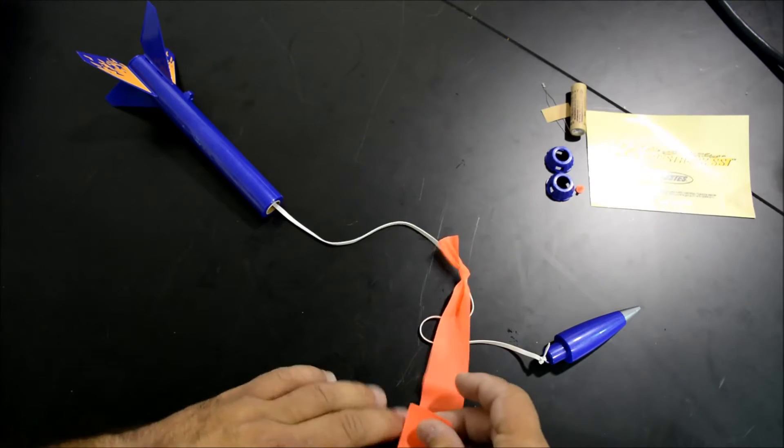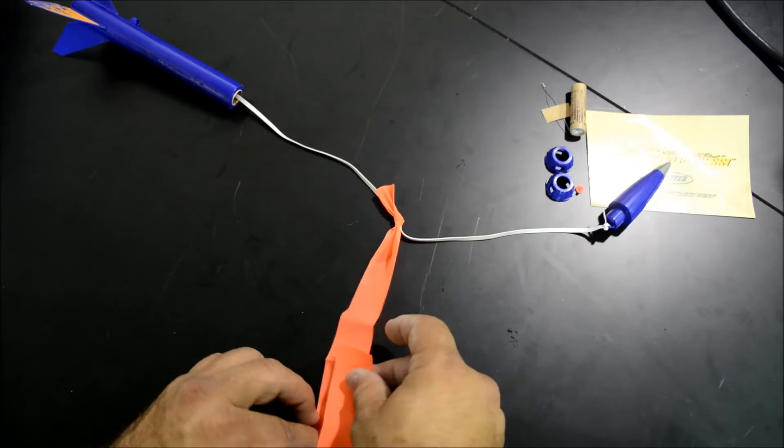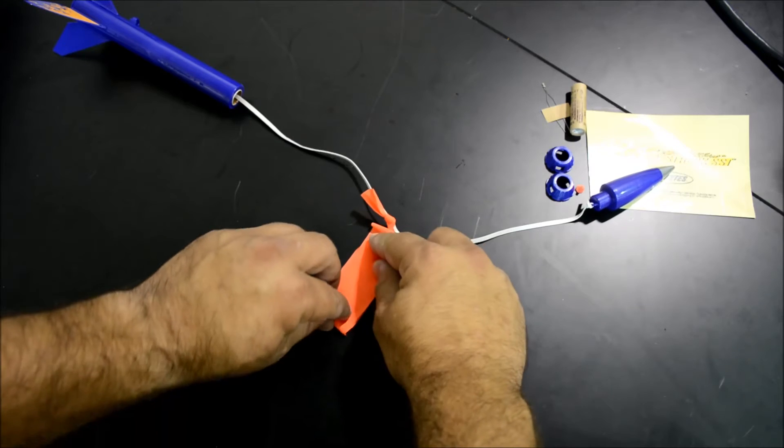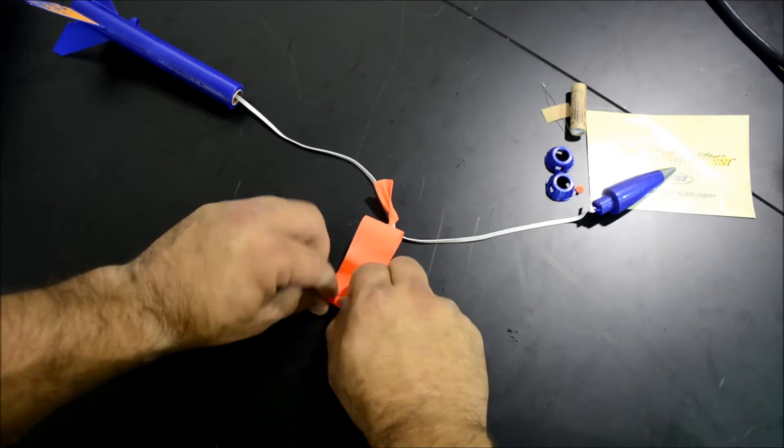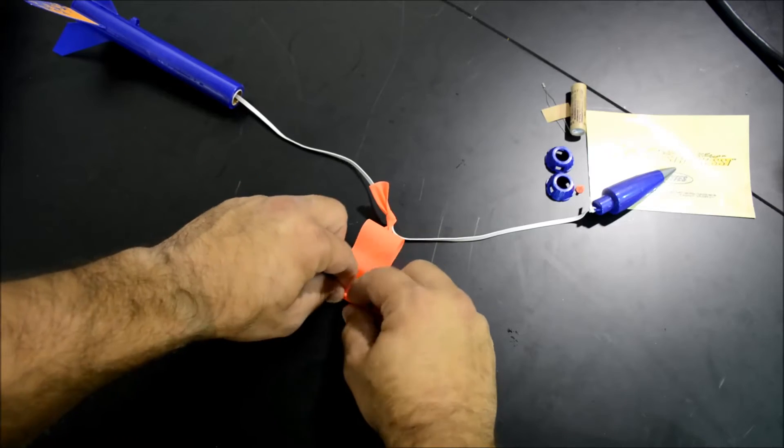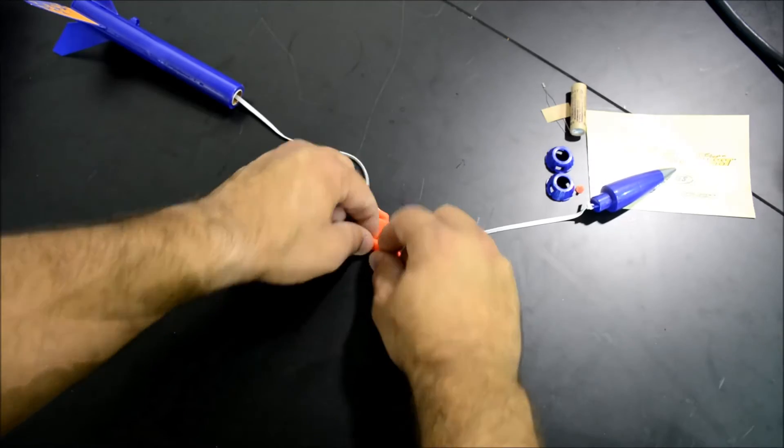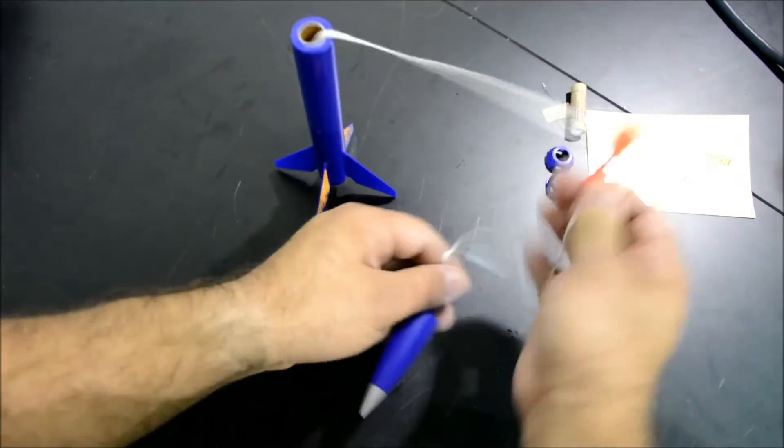Then fold the streamer into thirds, and roll. If you have large fingers like mine, this is probably the hardest part of the entire assembly.